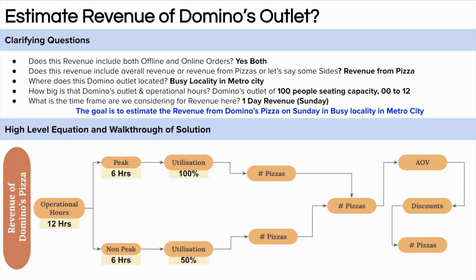So how do we get the number of pizzas in peak hours? That will be 6 hours × 60/15 (average 15 minutes of baking) × 2 ovens × 4 (one oven can bake four medium-sized pizzas together), assuming we can also bake some garlic breads and sides alongside. That gives us 192 medium-sized worth pizzas in peak hours. I am assuming the baking time remains the same for small, medium, or large sizes.